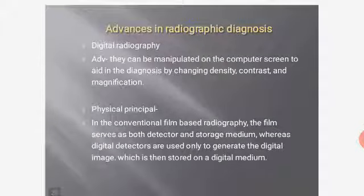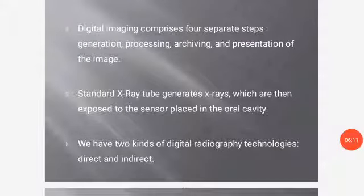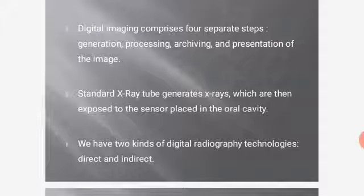Advances in radiographic diagnosis: Digital radiography. Advantages include the ability to manipulate images on a computer screen to aid diagnosis by changing density, contrast, and magnification. In conventional film-based radiography, the film serves as both detector and storage medium; whereas digital detectors are used only to generate the digital image, which is then stored on a digital medium. Digital imaging comprises four separate steps: generation, processing, archiving, and presentation of the image. A standard X-ray tube generates X-rays which are exposed to a sensor placed in the oral cavity. There are two kinds of digital radiography technology: direct and indirect.